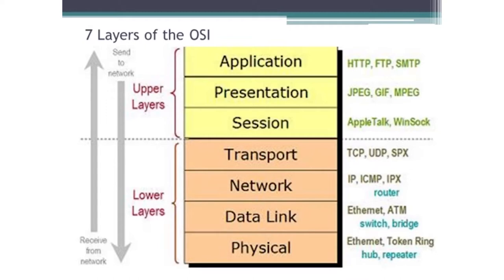We use devices like routers to help us make decisions about where and what is the best path to get to that particular network ID. Once we get that packet to you through whichever router is closest to you, it enters into what we like to call the physical aspects of the network — what's actually called the local area network. We call that layer 2, the data link layer.